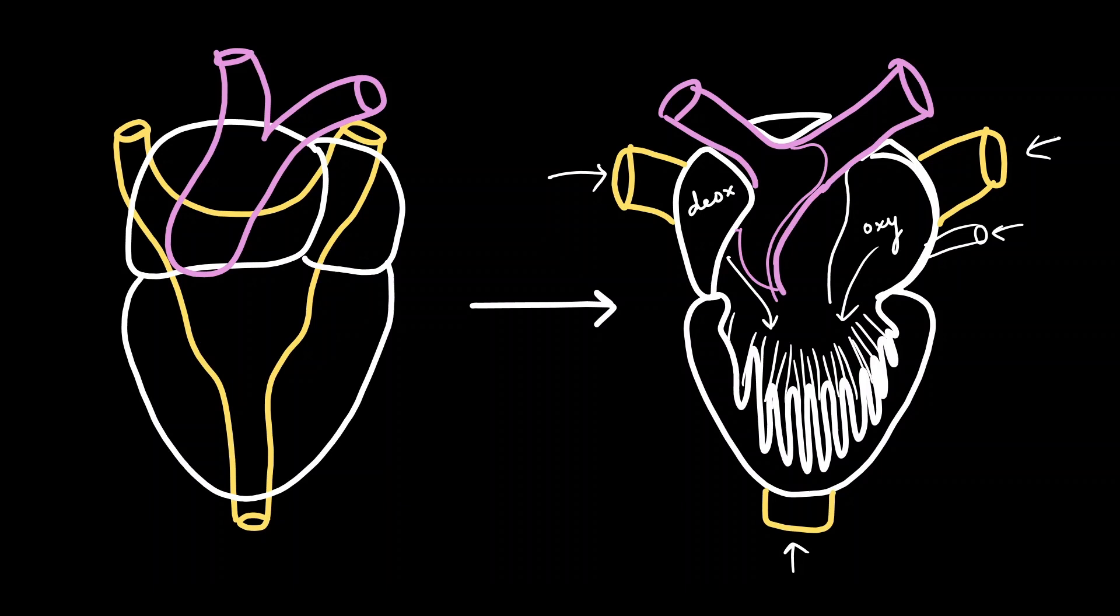Now deoxygenated blood and oxygenated blood both enter into the ventricle. But they don't extensively mix because of these ridges that you see here. Now when the ventricle pumps, the blood enters into the conus arteriosus and there is a branch which goes on to the right and the left. The one to the left supplies the blood to the aorta, and from there it goes to different parts of the body.